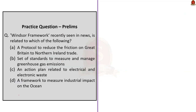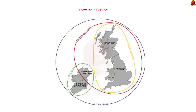The next question is about the Windsor Framework, which is recently seen in news and is related to a protocol to reduce friction on Great Britain to Northern Ireland trade. To understand the treaty, you should know about the UK, Great Britain and Northern Ireland. Great Britain is an island consisting of England, Wales and Scotland. Northern Ireland is not a part of Great Britain. However, the United Kingdom includes Northern Ireland apart from England, Wales and Scotland. The Republic of Ireland is a separate country. Northern Ireland was created in 1921 and remained a part of the UK.